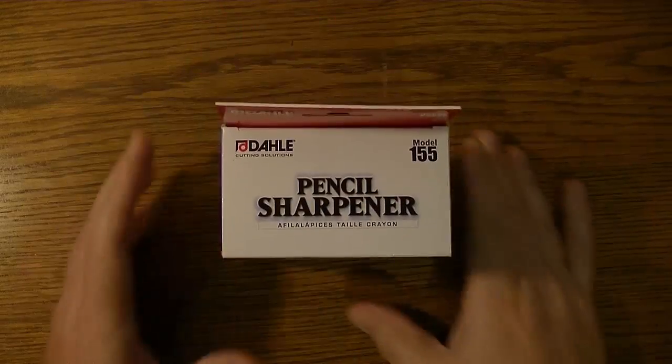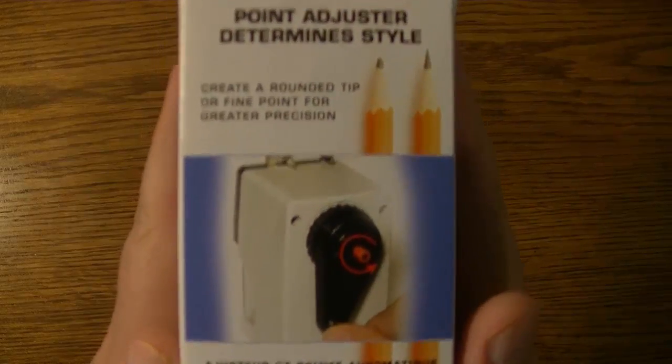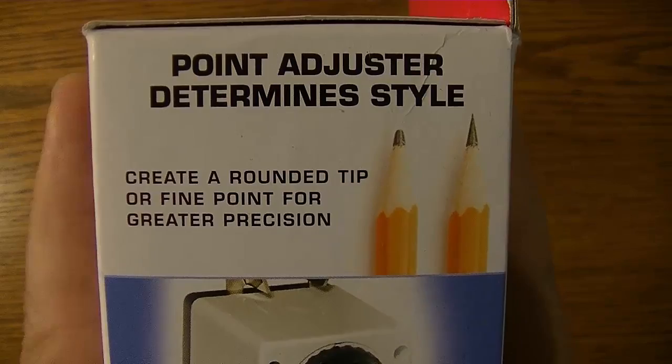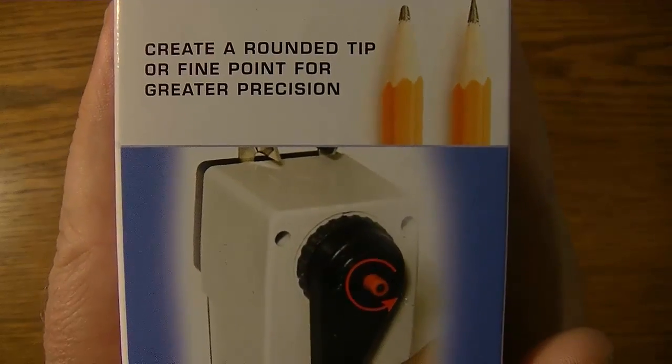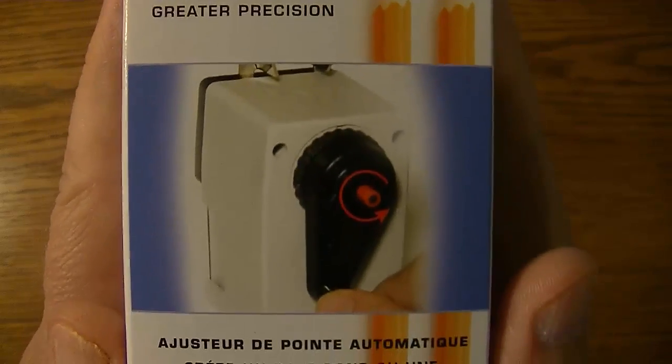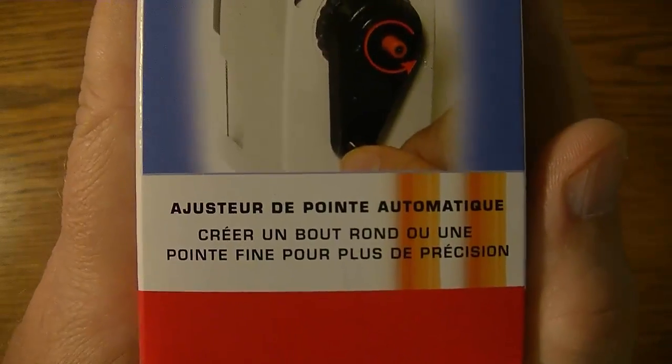Alright, time to take a look at the box close-up and see what we have here. It looks like it's got a point adjuster that determines the style - create a rounded tip or a fine point for greater precision. Hmm, two sharpeners in one, so I guess the rounded tip or the pointy tip.